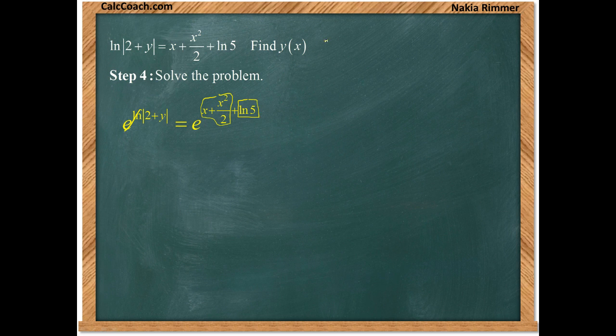If you have e^(a + b), that can be written as e^a times e^b. So we'll do that on the right-hand side. We'll have e to that x²/2 and the x, and then e to the ln(5).